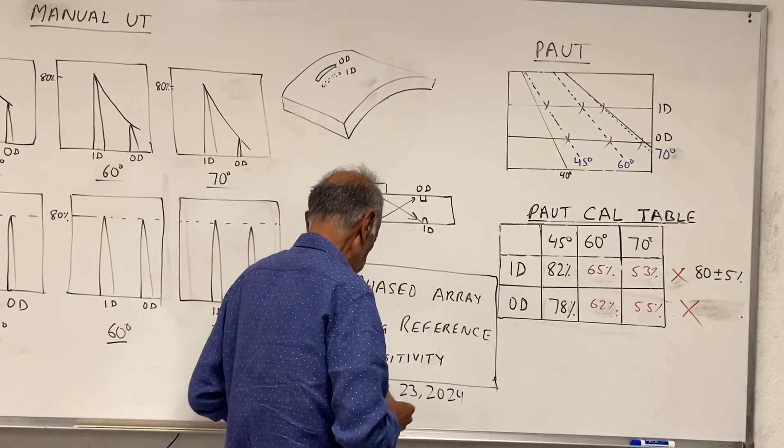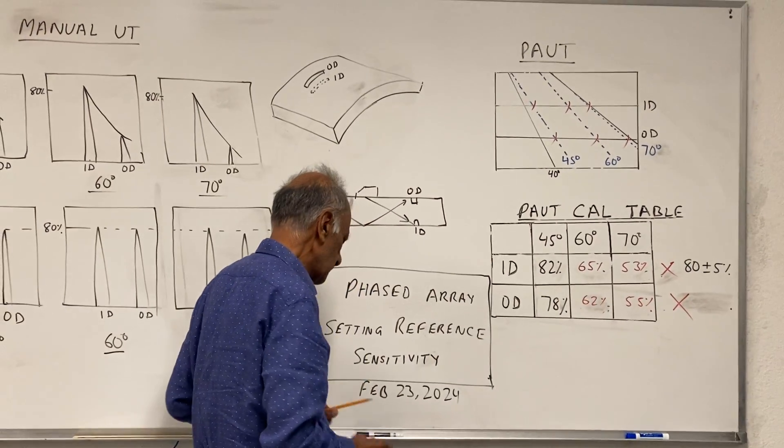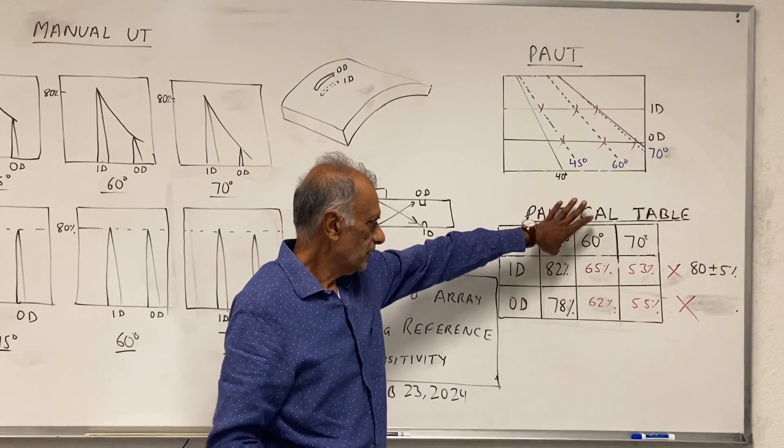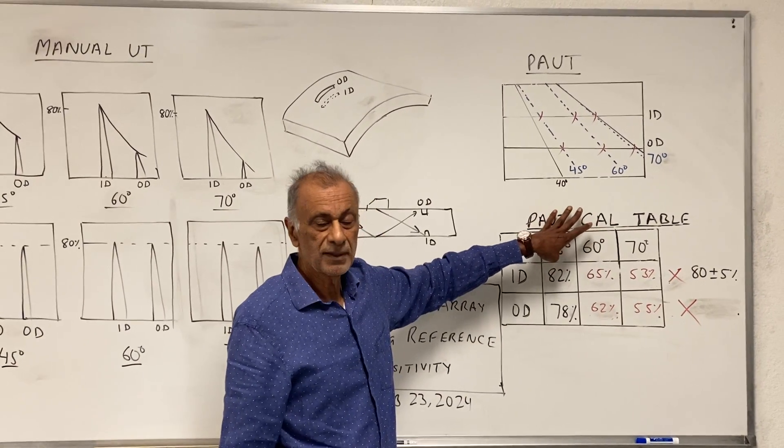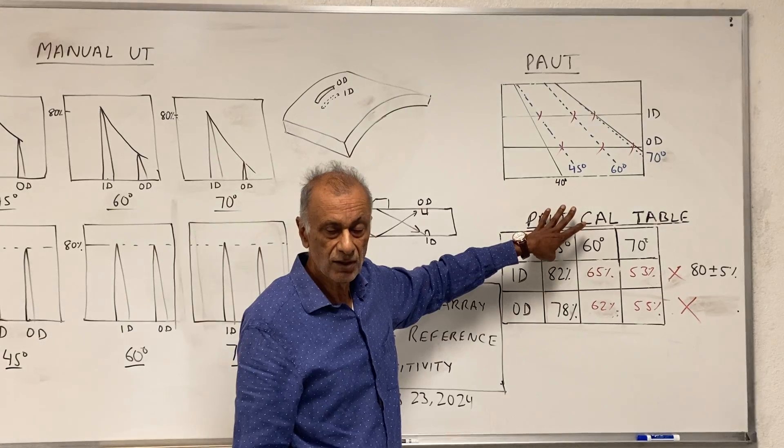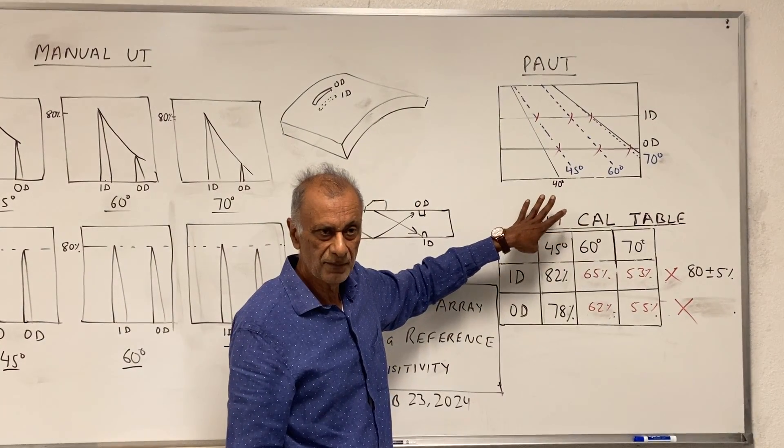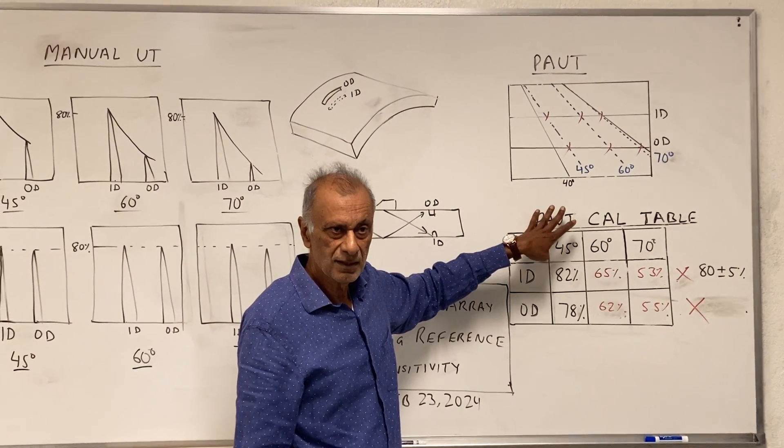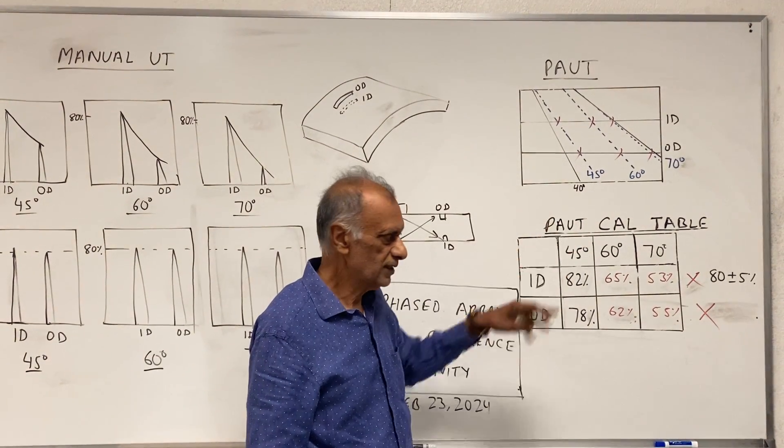So what I am trying to show you is that this calibration table has to be completed, and it has to be completed on the notches, not on the holes. When you are doing piping inspection, the calibration has to be set up on the notches.